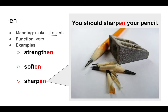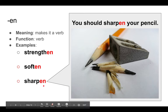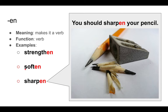Then we have -en, and it makes a word a verb. Its function is a verb. So we have strengthen, soften, sharpen. It takes basically an adjective, such as soft and sharp, and it makes it a verb. When we have -en, we're saying it makes it sharp, it makes it soft, it makes it strong. By the way, strength is actually a noun. For example, you should sharpen your pencil — make your pencil sharp. The pencil sharpener sharpens the pencil.